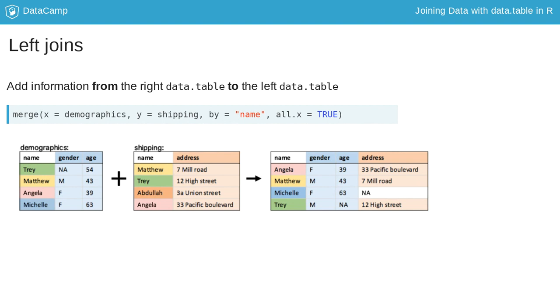The data table on the left side of the join is the data table given to the x argument of the merge function. To perform a left join with the merge function, you set the argument all.x to be equal to true.